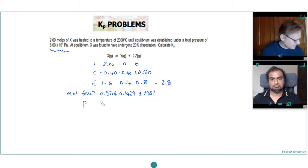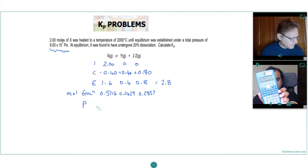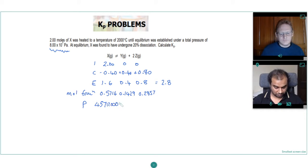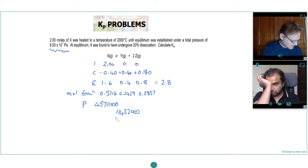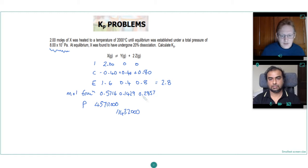That's a big number: 4.5712 times 10 to the 7. And then 0.1429 times by 8 times 10 to the 7 is 1.1432 times 10 to the 7. And 0.2857 times 8 times 10 to the 7 is 2.2856 times 10 to the 7. And those are the partial pressures of X, Y, and Z.